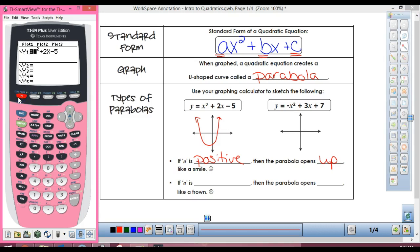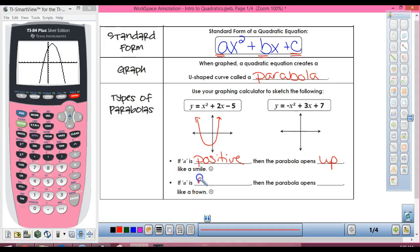If a is negative, so if I go and I make this guy a negative x squared plus 3x plus 7, and I graph this one, now what is a? A is negative. A is a negative one. And now, what does my parabola look like? It opens down.